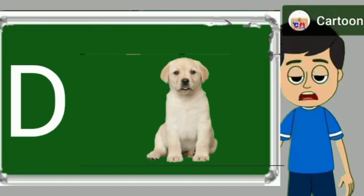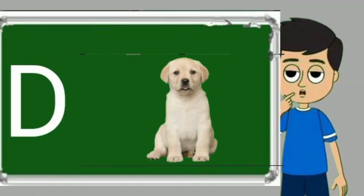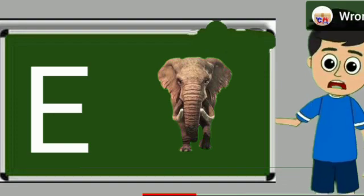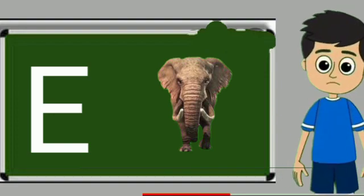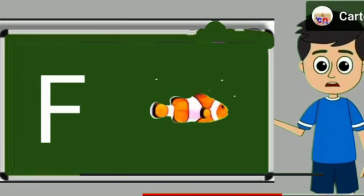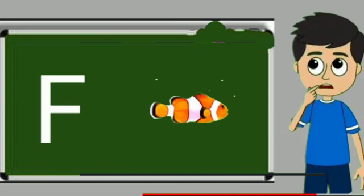D for dog. Dog means kutta. E for elephant. Elephant means hathi. F for fish. Fish means machli.